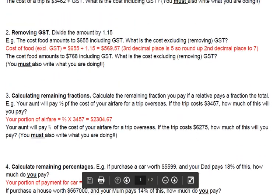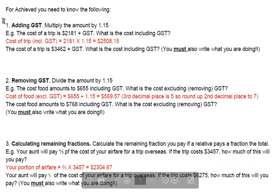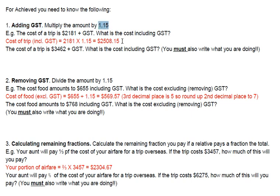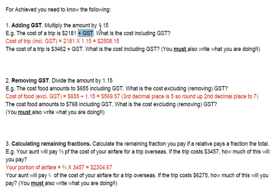So let's start at the very top. Adding GST, number 1. All you have to do is simply multiply by 1.15. Now there is a rationale behind this — by the distributive law, you're multiplying by 1 and then also by 0.15. That 0.15 is in fact the GST.